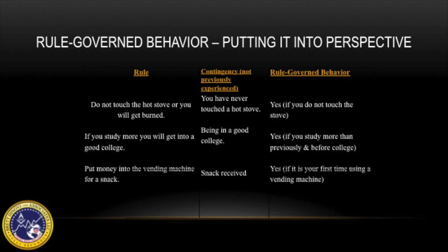This chart titled Rule-Governed Behavior puts it into perspective, showing different rules, contingencies, and how they relate to Rule-Governed Behavior. In this example, the rule would be 'do not touch the hot stove or you will get burned.' The contingency you didn't previously experience is if you never touched the stove and therefore never got burned. What makes it Rule-Governed Behavior is if you follow that contingency and actually don't touch the stove, therefore avoiding being burned.